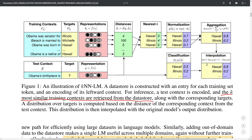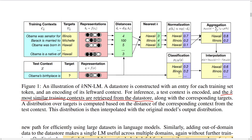The KNN language model seems particularly effective for cases where you need to predict factual information, because the standard language model may be distracted by various other sequences in the dataset. For example, a sequence like 'Michelle's birthplace is Illinois' could confuse the language model, but the KNN similarity-based model can retrieve the correct fact more accurately.